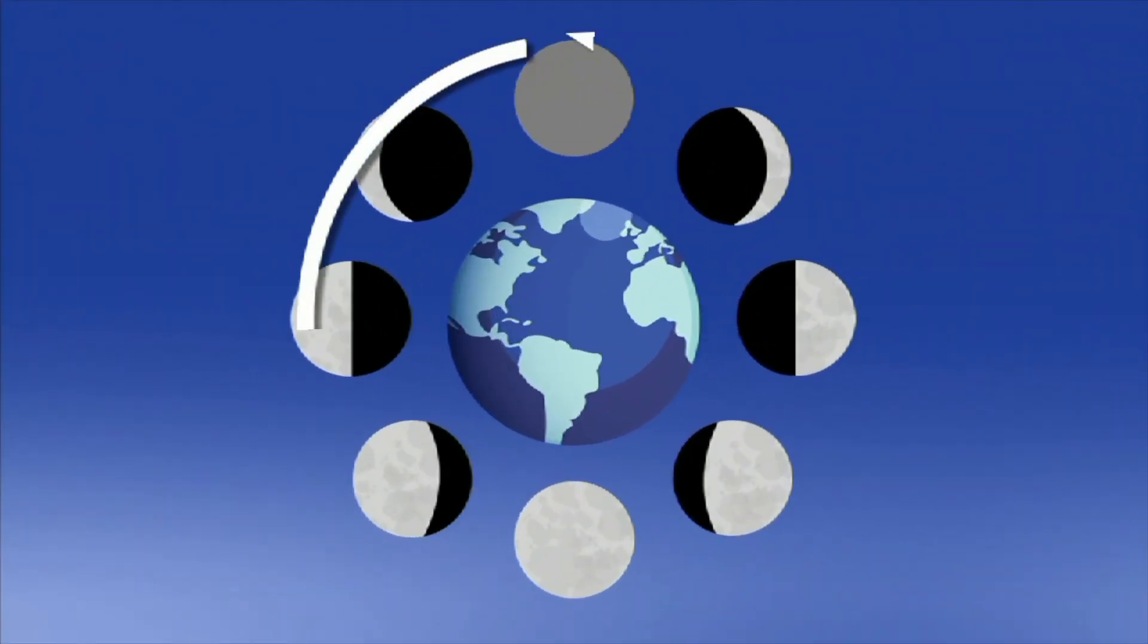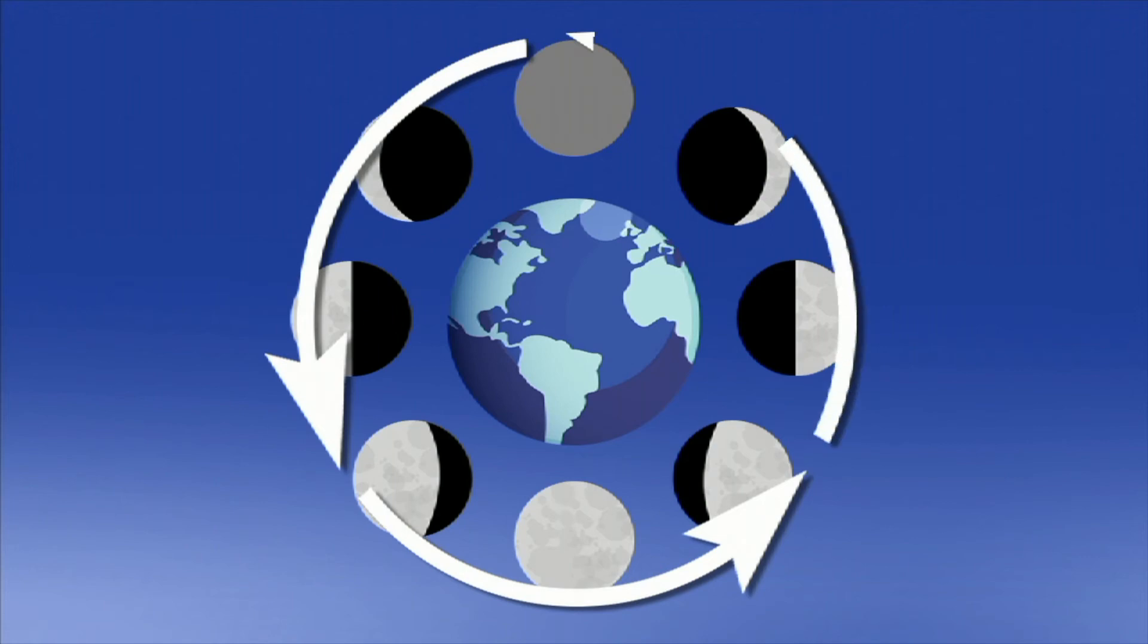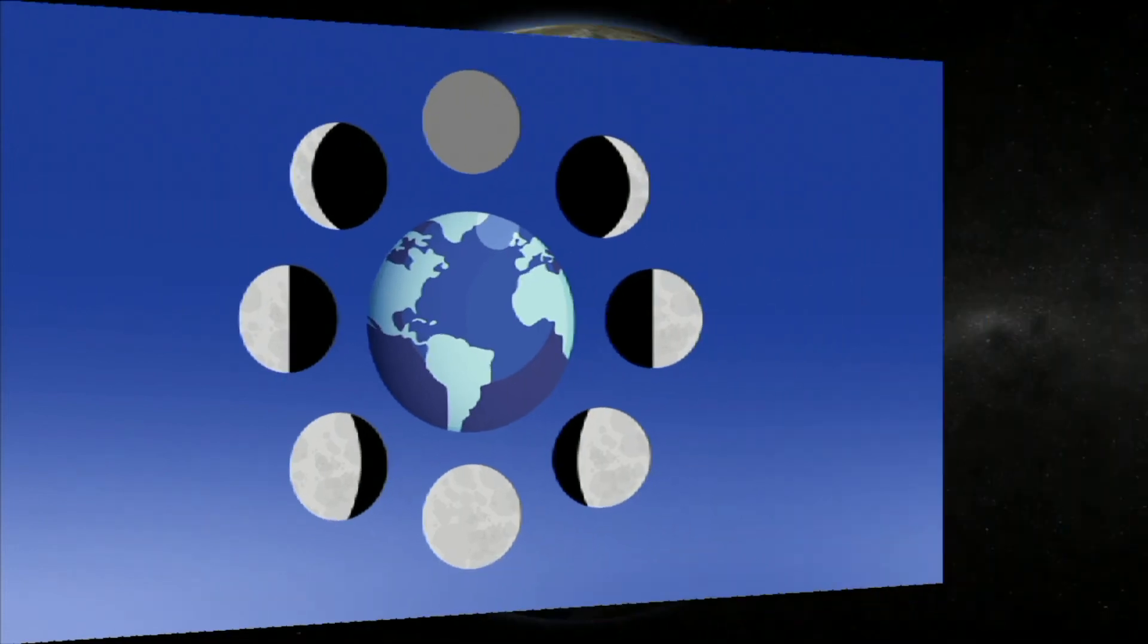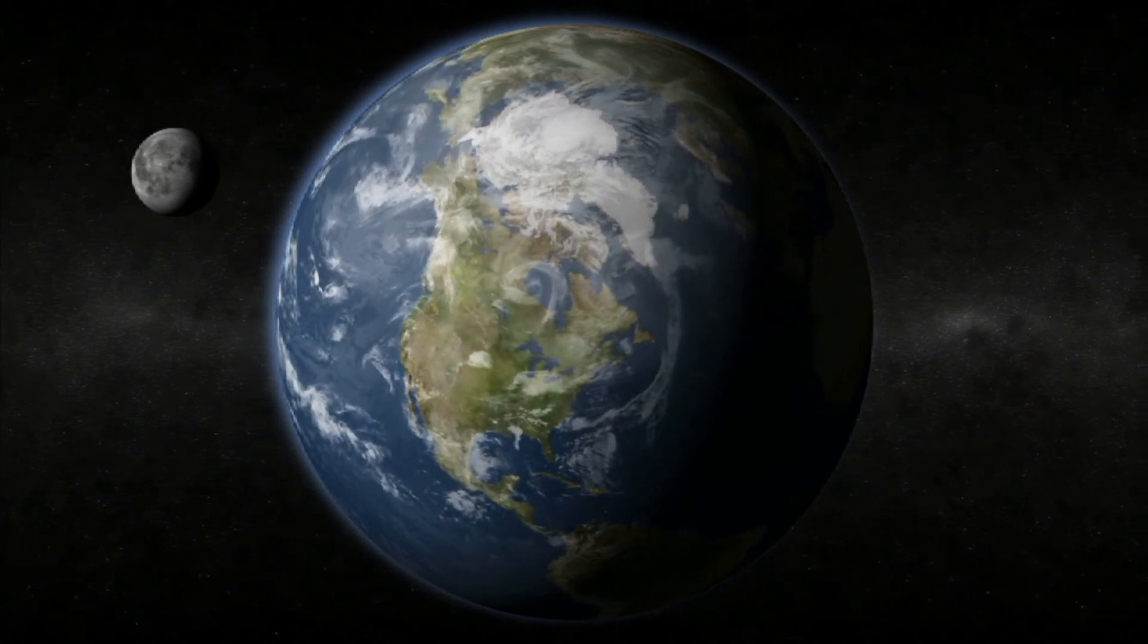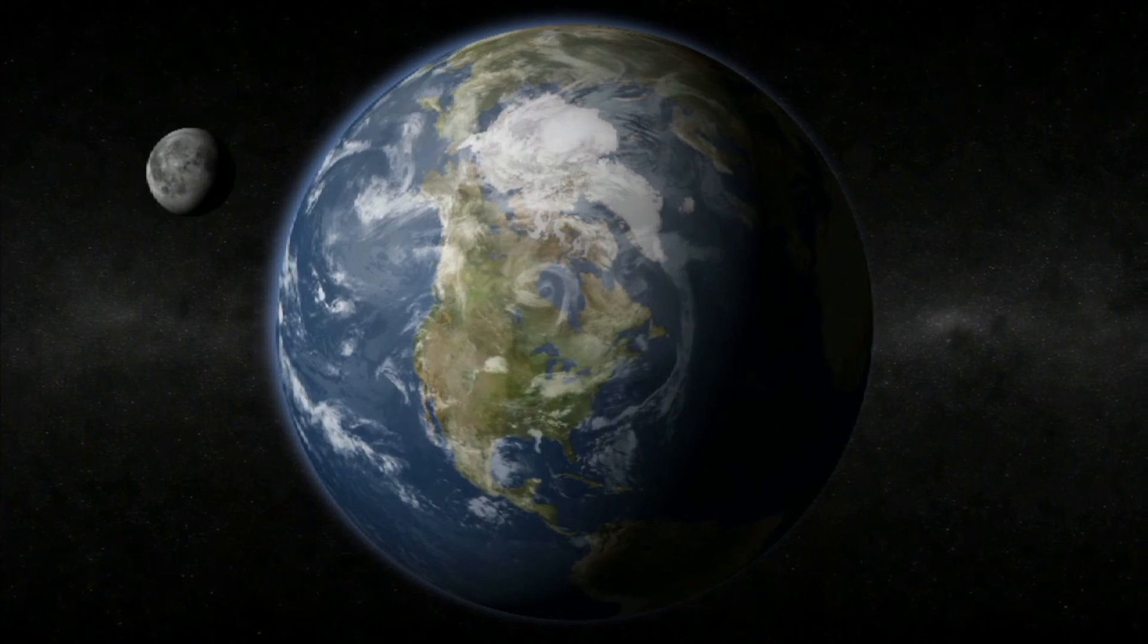Now that you better understand the different cycles of the moon, think about this. In what cycle does the moon reflect the most light on the Earth? In what cycle does it reflect the least?